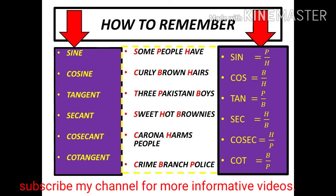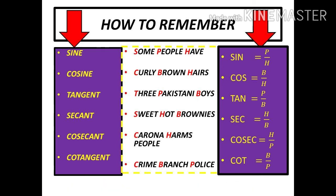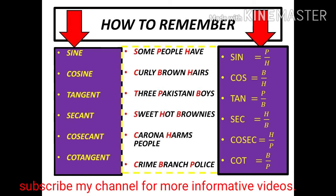The third one is tangent. Tangent is equal to "3 Pakistani Boys". T is for tangent, P is for perpendicular, and B is for base. So tangent equals perpendicular upon base.